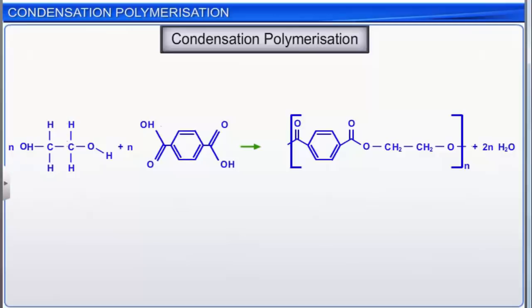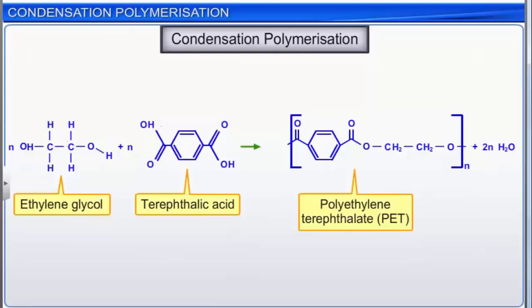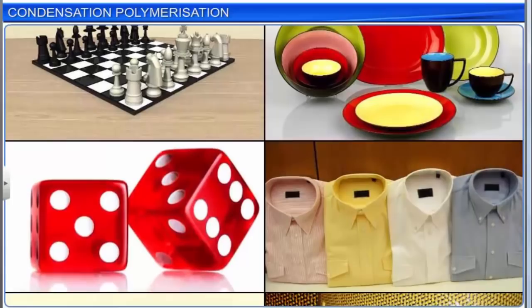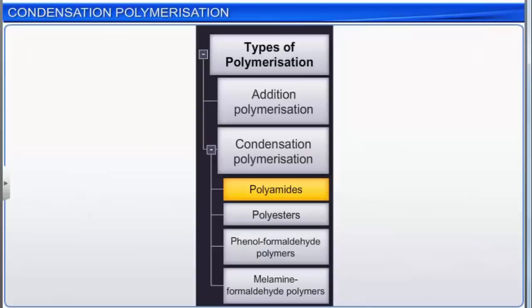Illustrated here is the condensation reaction between ethylene glycol and terephthalic acid to form polyethylene terephthalate (PET), also known as Dacron. Note that in each step, when two different monomers combine, a water molecule is eliminated. Let us now see how some important condensation polymers are prepared and their uses. Polyamides, polyesters, phenol formaldehyde polymers, and melamine formaldehyde polymers are all important condensation polymers.